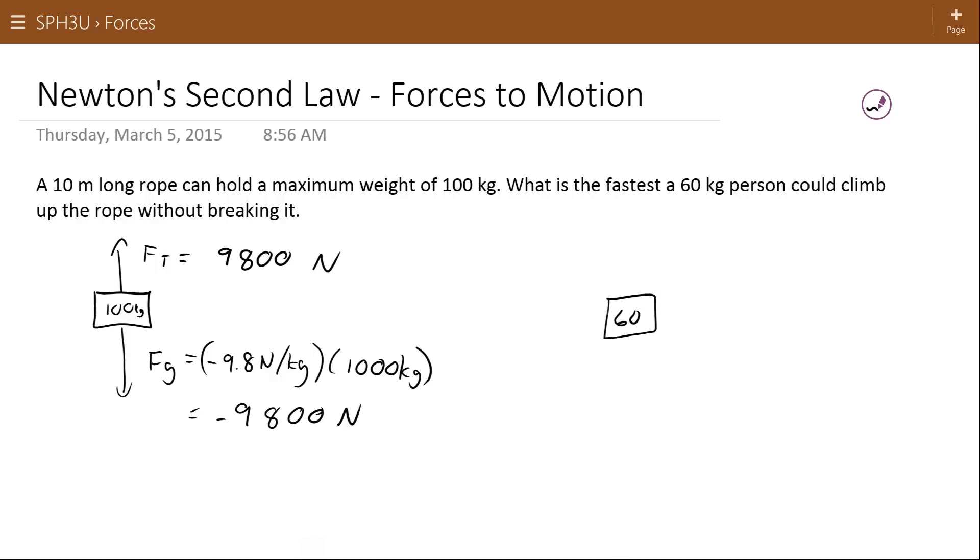So what that means then is if the 60 kilogram person is going to try to accelerate upwards using the rope as fast as possible, the biggest force of tension that that rope can support is still 980 newtons. So they can't pull on that rope any harder than that or else they'll break it.